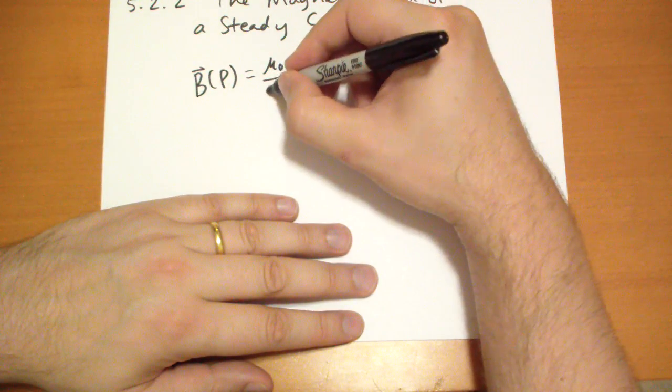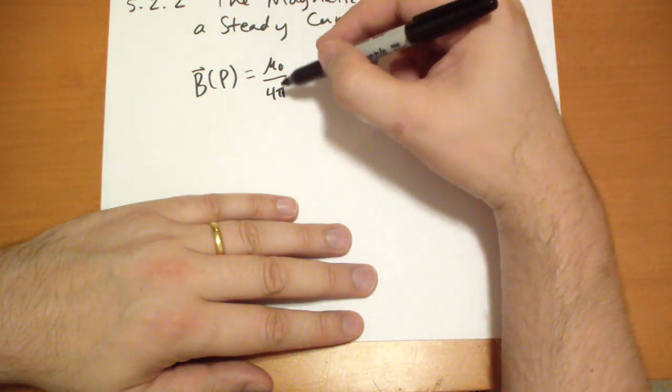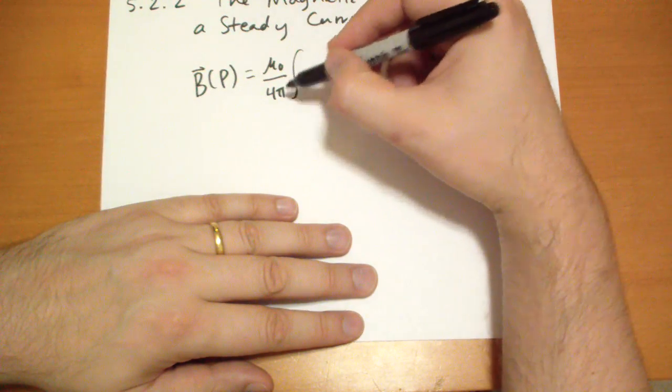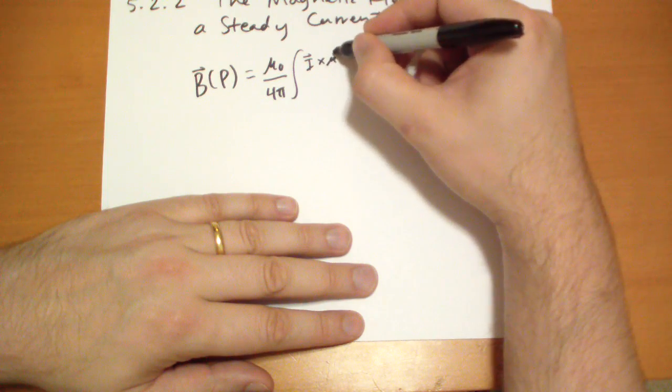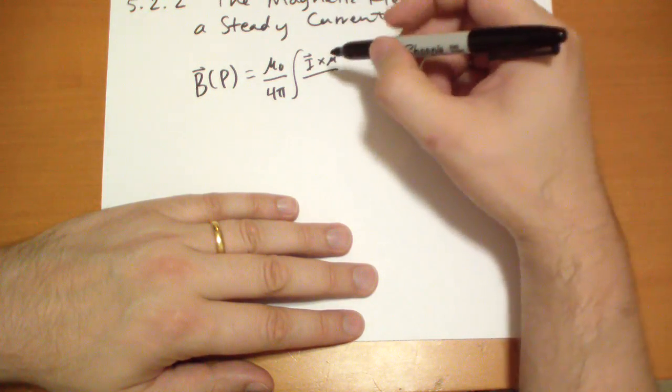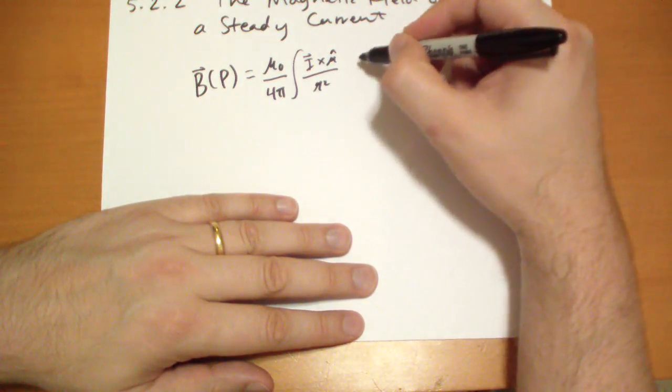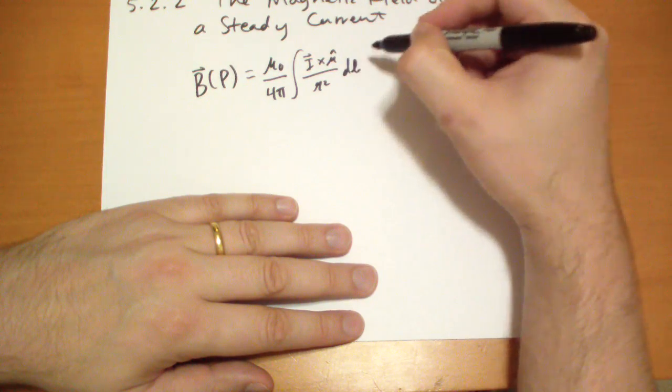Is given by this rather simple formula: mu0 over 4pi, the integral of some current, r-hat over curly r-squared dl.